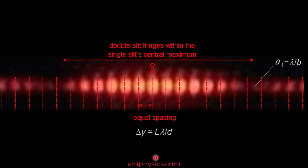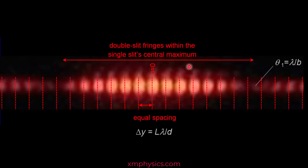One way to really understand this pattern is to remind yourself that the light from the two slits, when they arrive at the screen, doesn't arrive with the same brightness. The two beams of light from the two slits will arrive brightest at the middle and dim down towards the sides according to the single slit diffraction pattern. So when these two beams interfere with each other to produce the bright fringes, naturally the outcome of the constructive interferences will also have their brightness vary according to the single slit diffraction pattern.